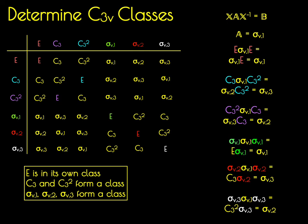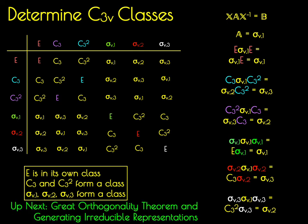Coming up, what we're going to do is we're going to use the class structure of the C3V point group and consequences of something called the Great Orthogonality Theorem to derive irreducible representations for the C3V point group.